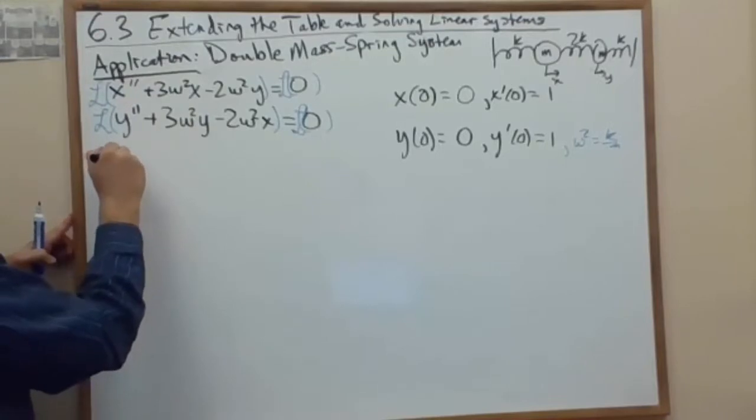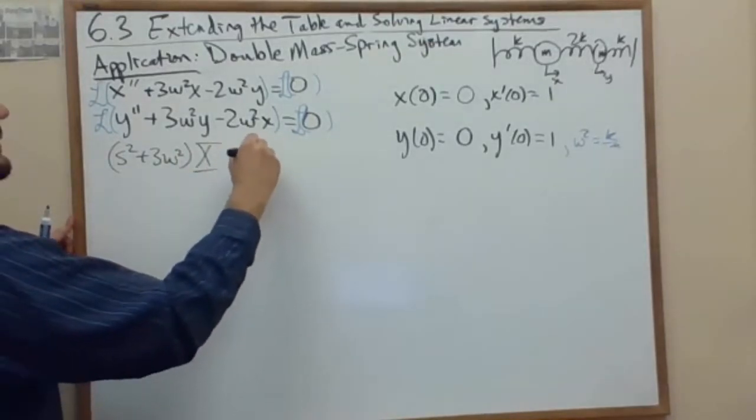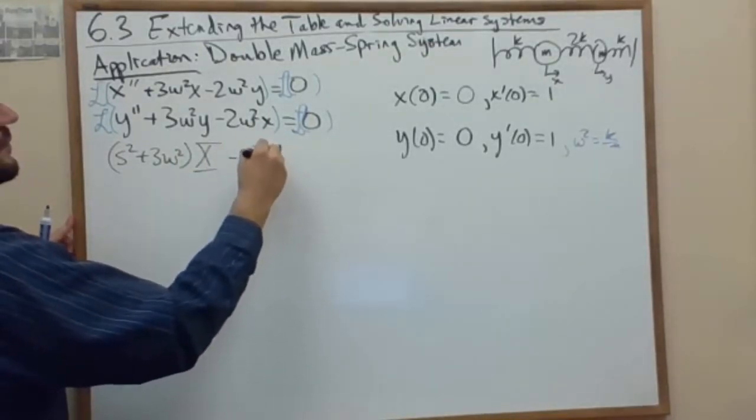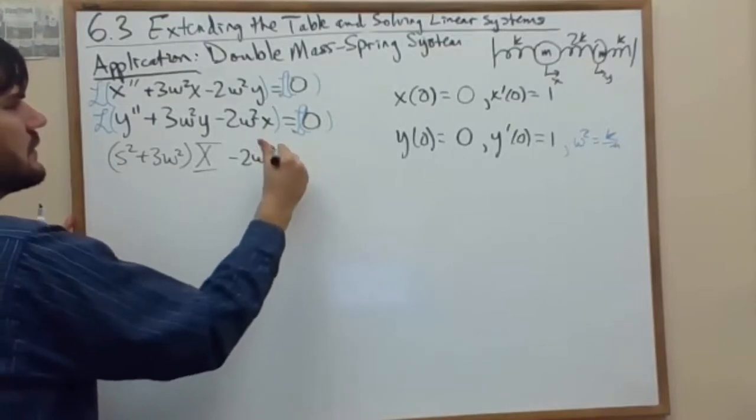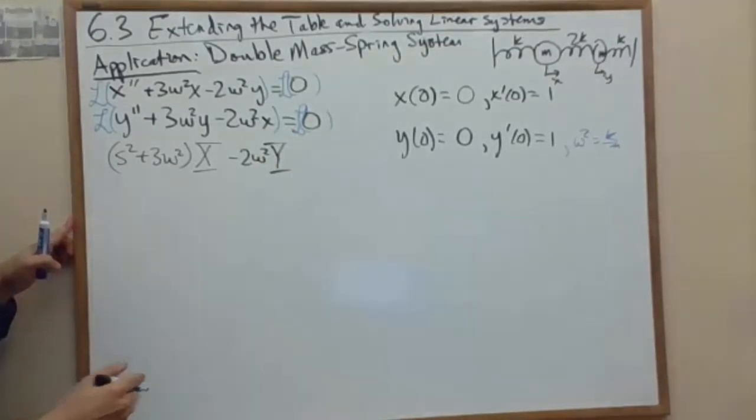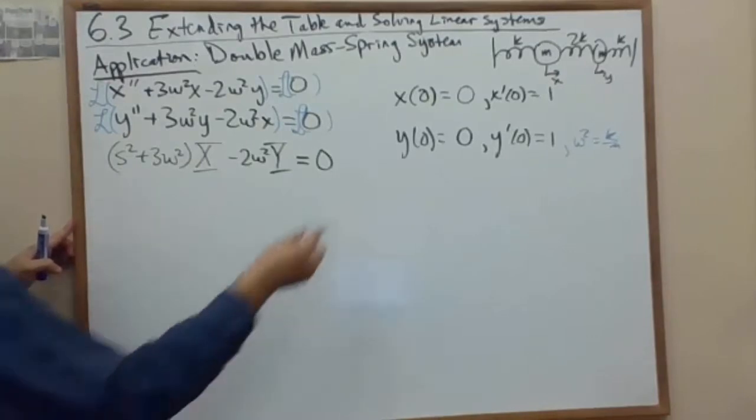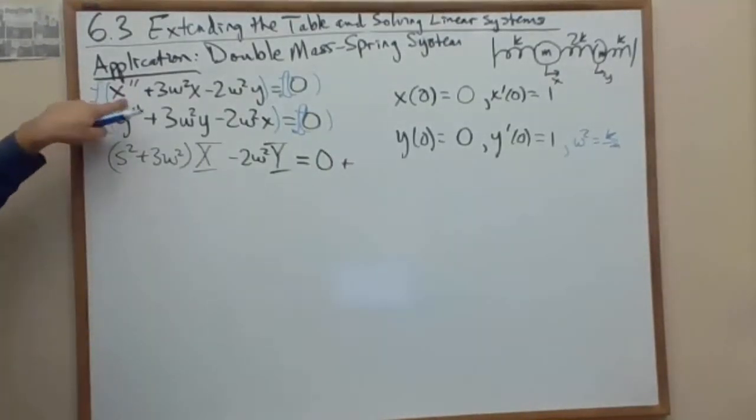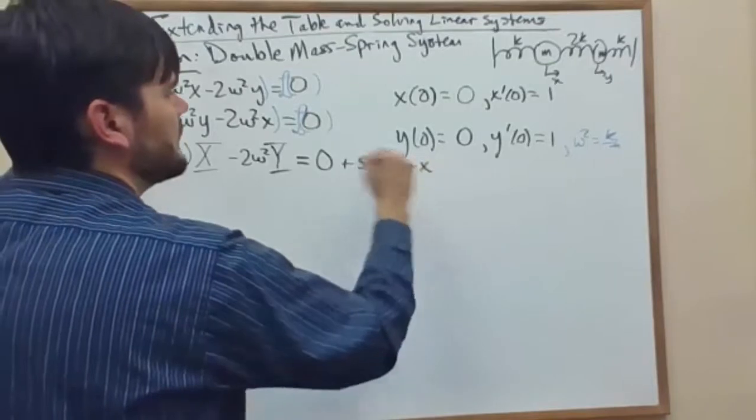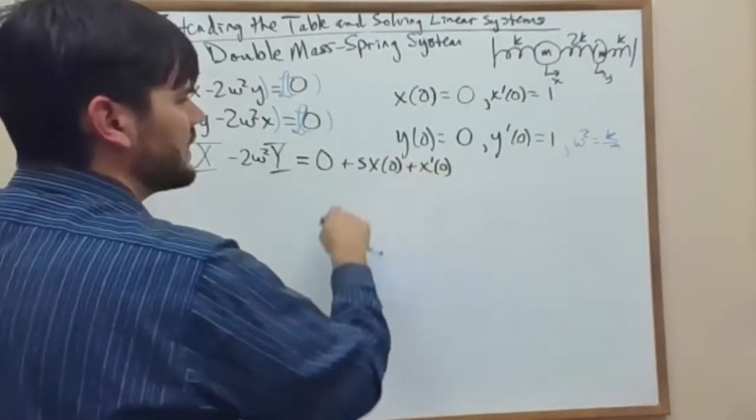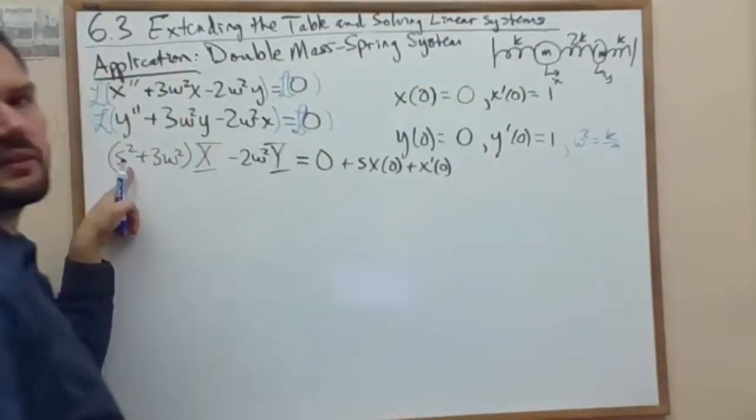So in terms of the x's I will get an s squared plus 3 omega squared, in terms of the y's just minus 2 omega squared. On the right-hand side I get the initial conditions, so 0 for the transformation of 0, and then I add the pieces from x double prime. So I first add the initial position, and then I add the initial velocity. Again, we're stepping down in terms of s, starting with s squared, then s, then 1, as we go up in derivatives and turn initial conditions.